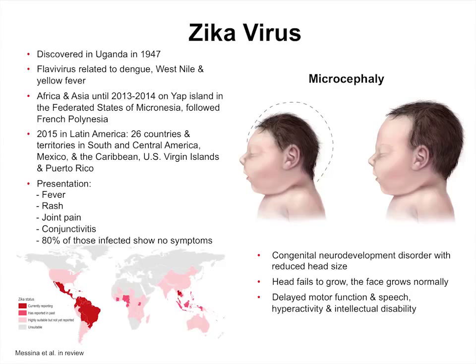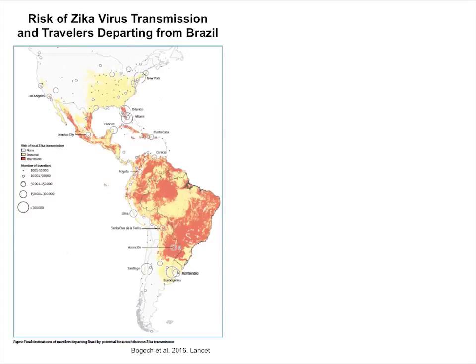This map shows the countries where Zika is currently present — dark red is where it has been reported recently, light red where it has been reported in the past, and gray areas where we don't think it would be sustained. Another figure discusses human movement at a much larger scale — continents rather than communities. One group mapped in orange where Zika could be transmitted year-round, yellow where maybe only during summer months when it's warm, and white where they don't think it would happen at all.